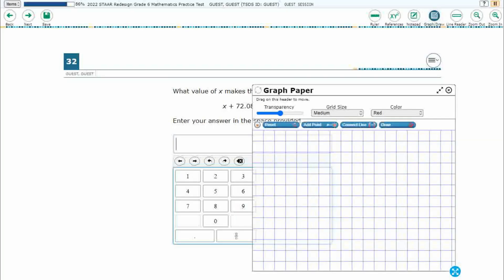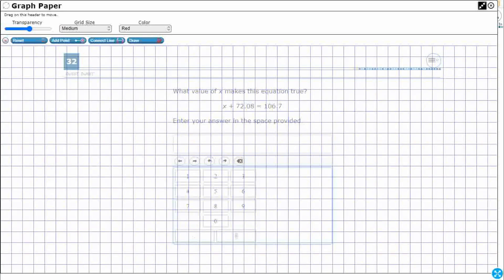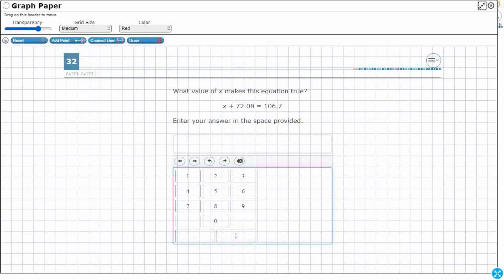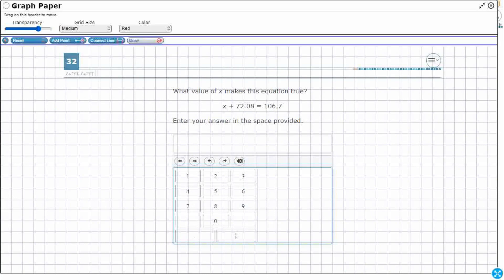Let's open up our graph draw feature here. So we simply have this one variable equation. x plus 72.08 equals 106.7.